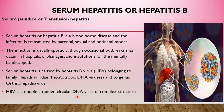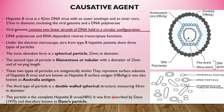HBV is a double-stranded circular DNA virus of complex structure. The hepatitis B virus is a 42 nanometer DNA virus with an outer envelope and an inner core of 27 nanometers in diameter, enclosing the viral genome and a DNA polymerase. The viral genome is a double-stranded DNA held in a circular configuration, and the DNA polymerase also functions as an RNA-dependent reverse transcriptase.